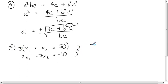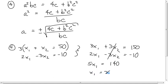Then you'd get 3x1 plus 3x2 is equal to 150. 2x1 minus 3x2 is equal to negative 10. And then you can add these two equations, those cancel, and you have 5x1 is equal to 140. That gives you x1 is equal to 28.